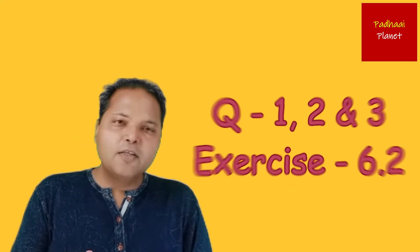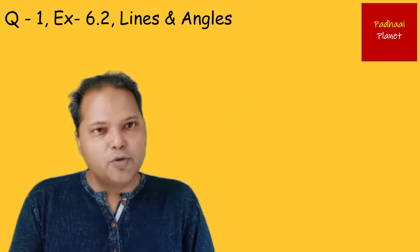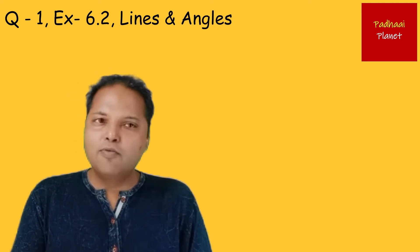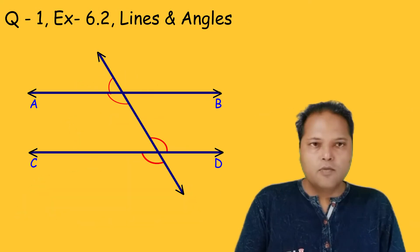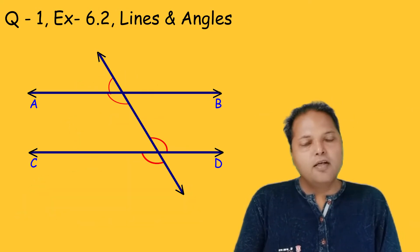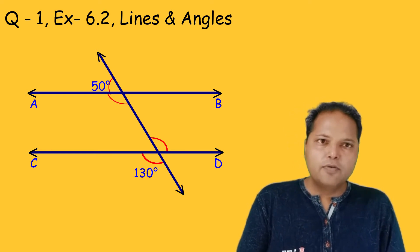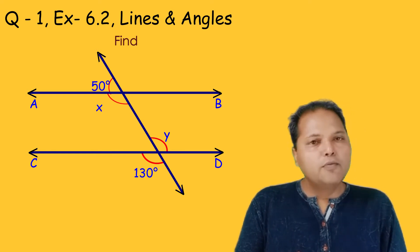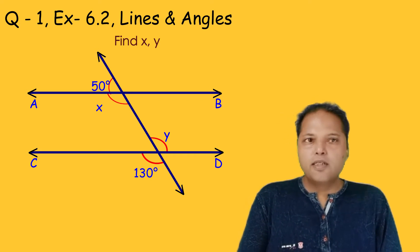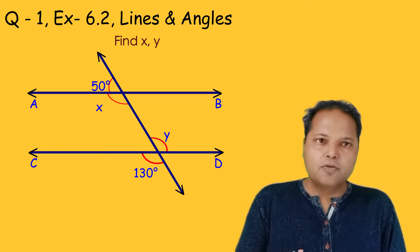I will be solving exercise 6.2 of chapter 9, Lines and Angles, of class 9th. We have a figure here and we need to find the values of angle X and Y. We also need to prove that line AB is parallel to CD.